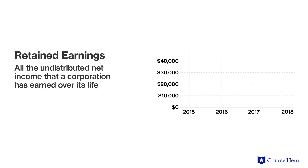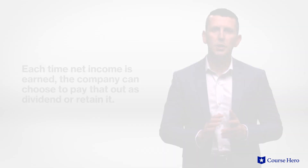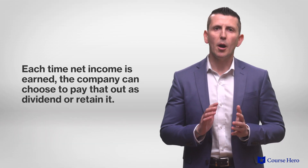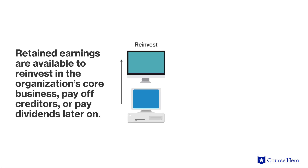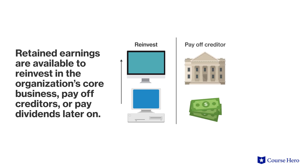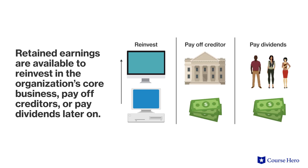Retained earnings includes all of the undistributed net income that a corporation has earned over its life. Each time net income is earned, the company can choose to pay that out as a dividend or retain it. It could also choose to pay out some portion and retain some portion. The accumulation of retained income gives retained earnings. These earnings are available to reinvest in the organization's core business, pay off creditors, or pay dividends later on.